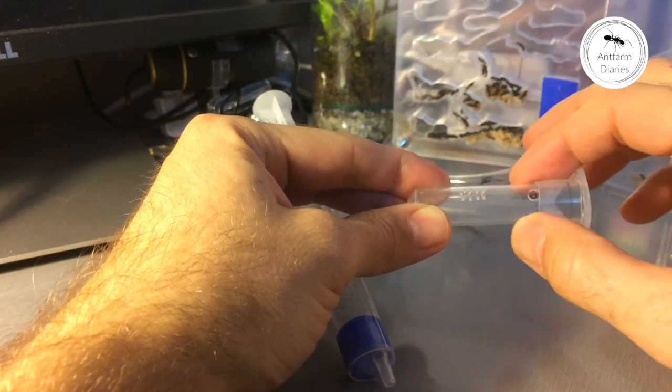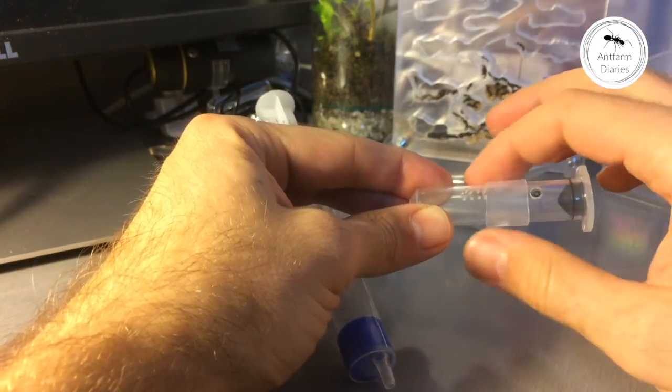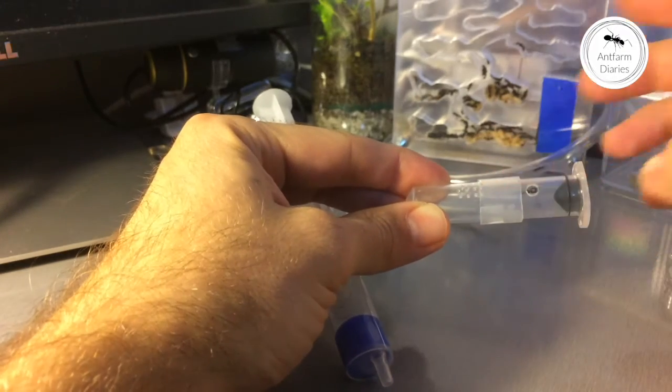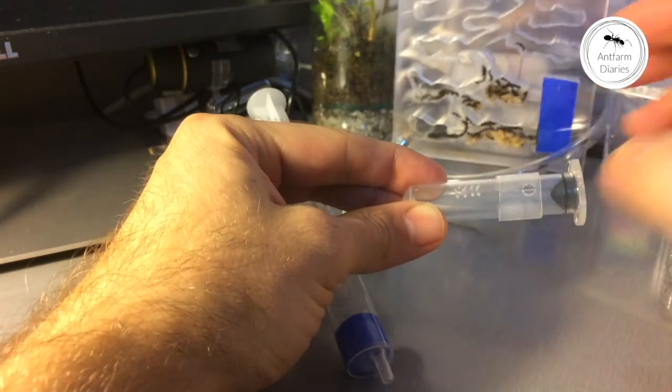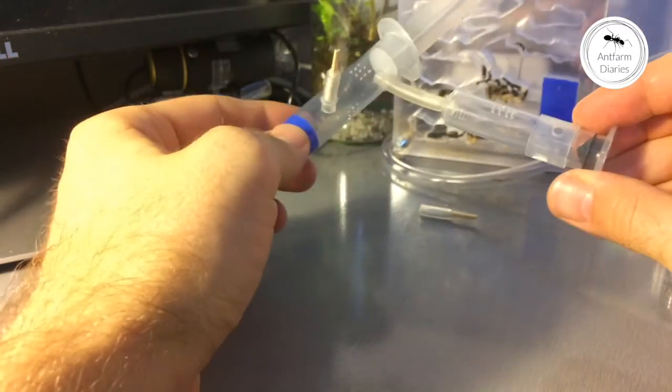So when I finished feeding I will just rotate this ring and the hole will be closed. Another option is to slide either way this ring so it will open the hole and I can easily feed them. Nobody will escape from there. And that's it.